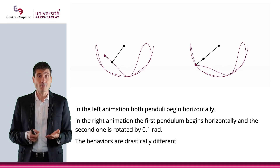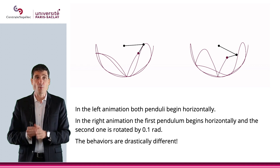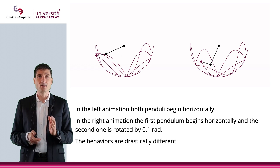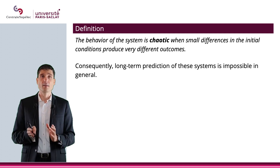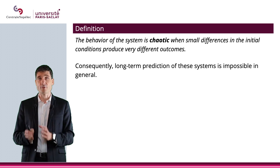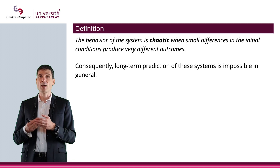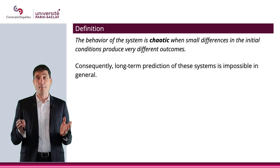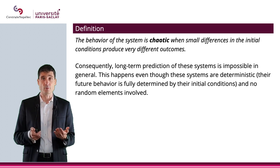The way the system behaves is actually very different. The initial conditions are really close, but the behaviors of the two systems are drastically different. This is called chaotic. The behavior of a system is chaotic when small differences in the initial conditions produce very different outcomes. What it means is that long-term predictions are basically impossible — very, very difficult to make.